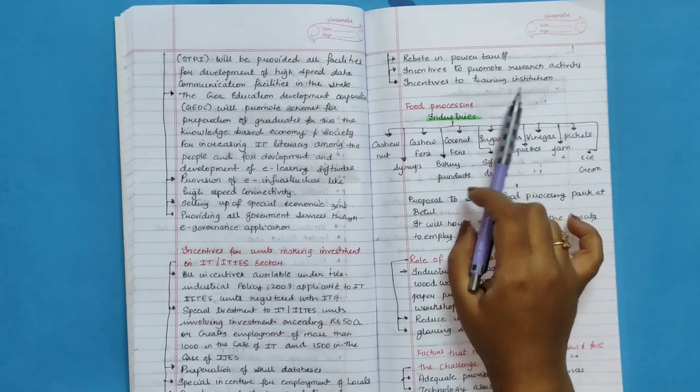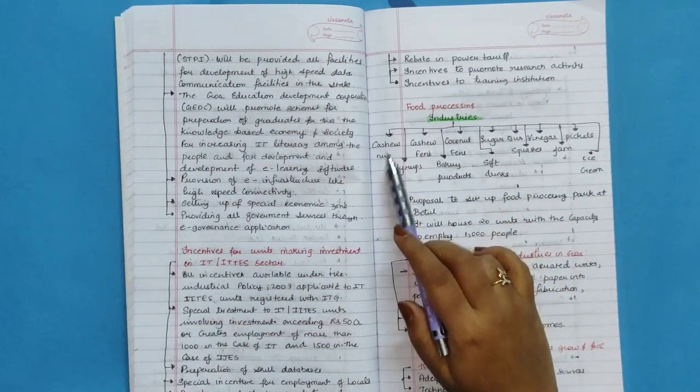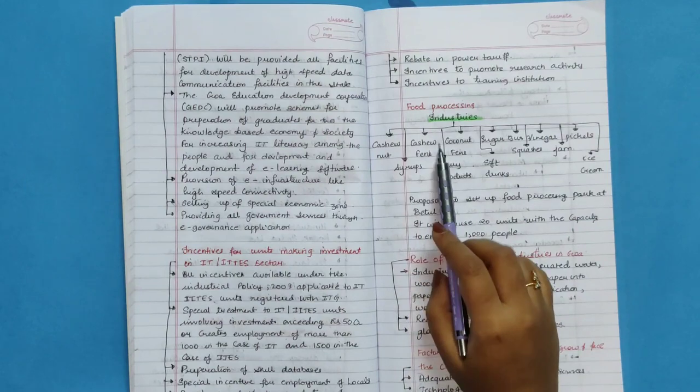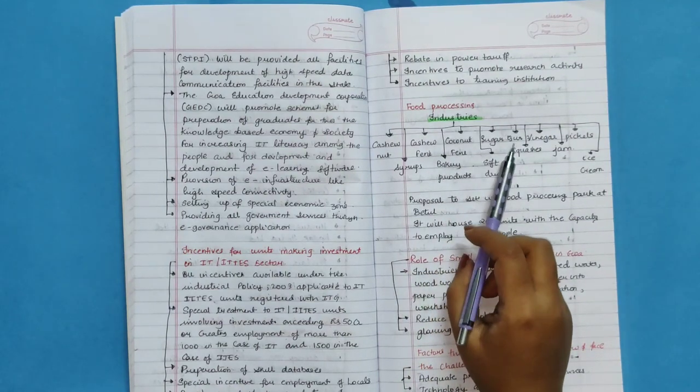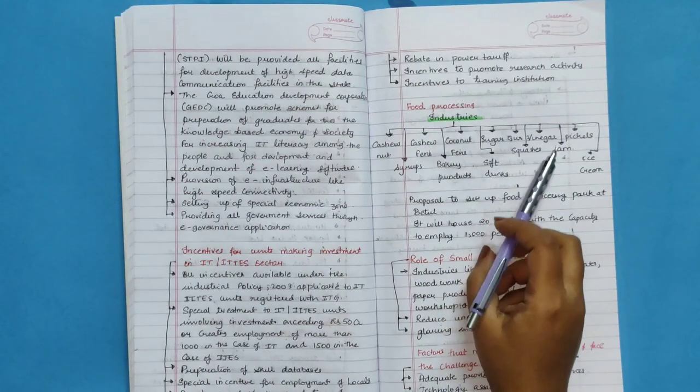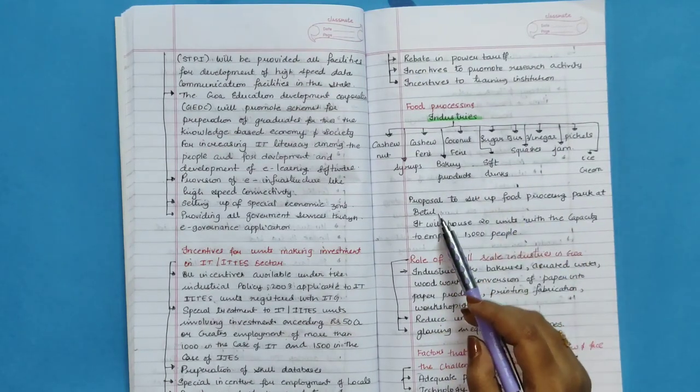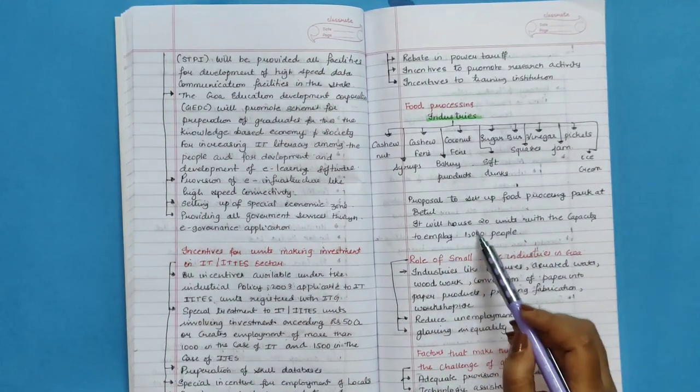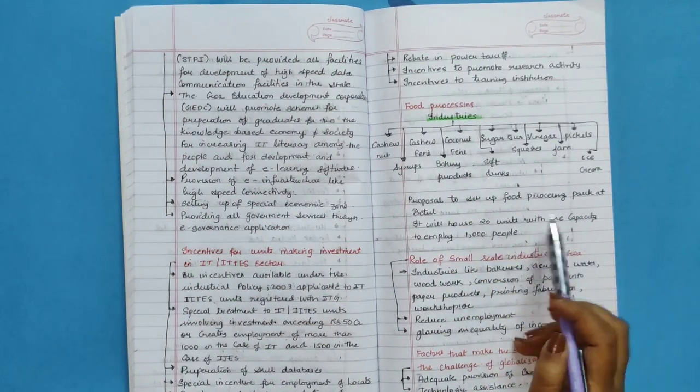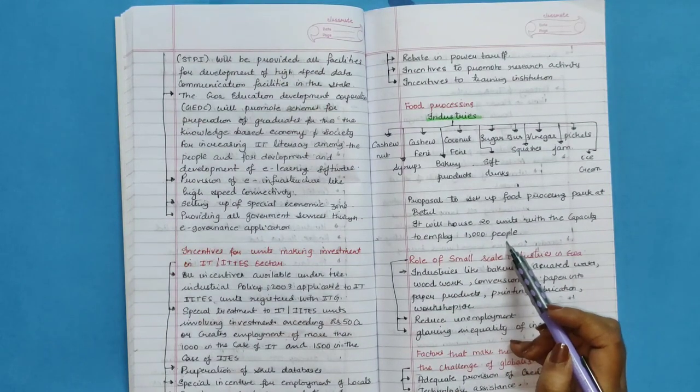Food processing industries like cashew nut, syrups, cashew feni, bakery products, coconut feni, soft drinks, sugar, jaggery, squashes, vinegar, jam, pickle, and ice cream. Proposal to set up food processing park at Betul. It will house 20 units with the capacity to employ 1,000 people.